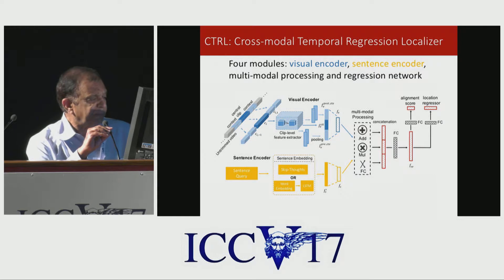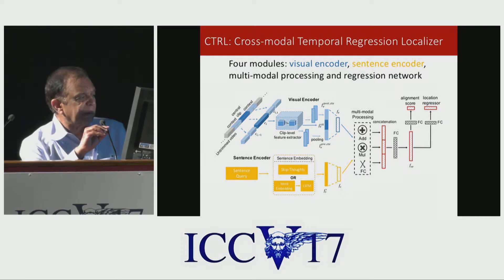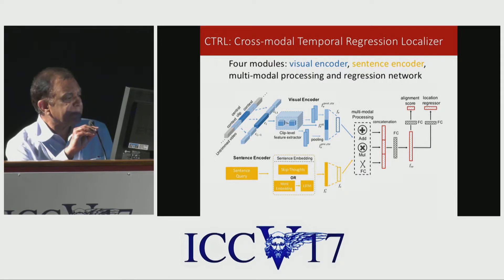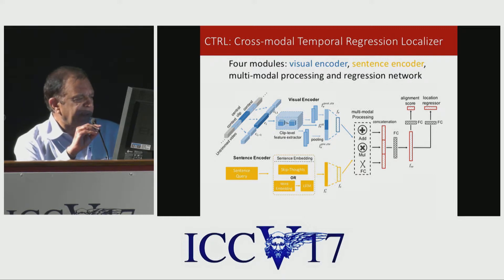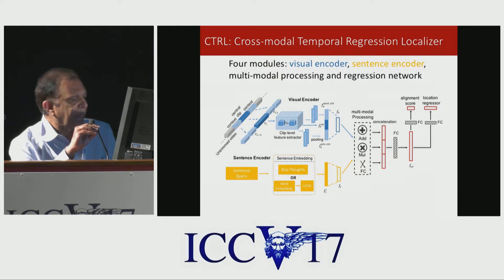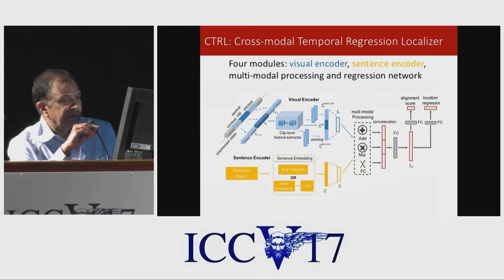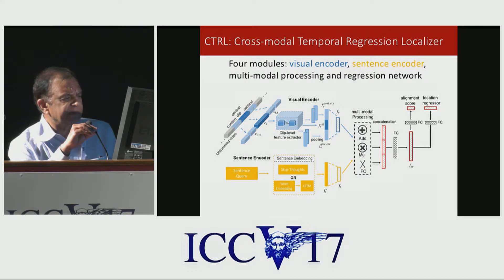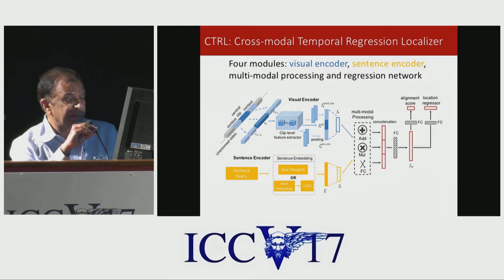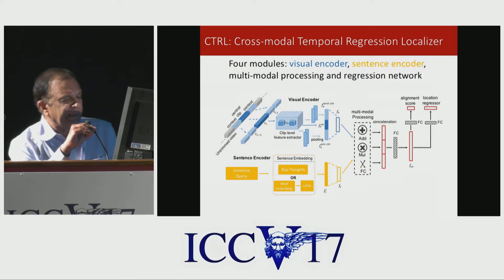Our system has four components. First is the visual encoder: it takes sliding window clips, computes features for them, uses the preceding and succeeding clips as context, and creates a feature vector. The sentence encoder takes a sentence and we have two different methods of encoding it into a feature vector. The visual and sentence features are fused in three ways: element-wise addition, element-wise multiplication, and simple concatenation, then passed to a fully connected layer.